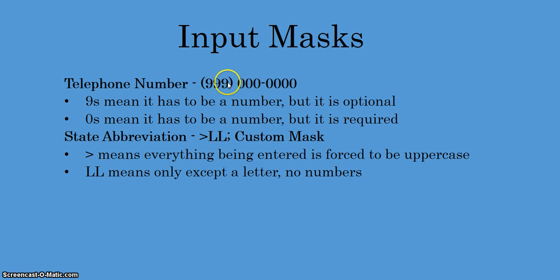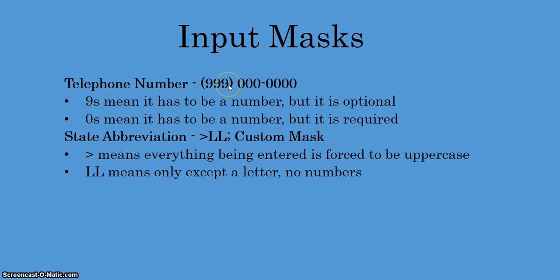So what do nines mean here and what do zeros mean here? Well, nines mean it has to be a number but it is optional — meaning the user is able to enter in the telephone number without entering the area code. Maybe your company requires the area code, maybe it doesn't. Zeros in this input mask mean that it must be a number and it is a required field.